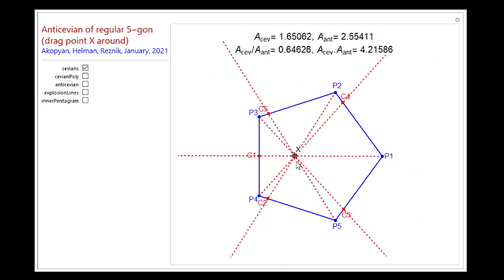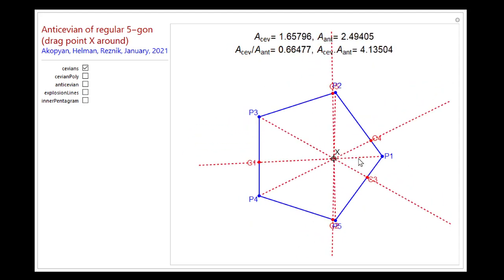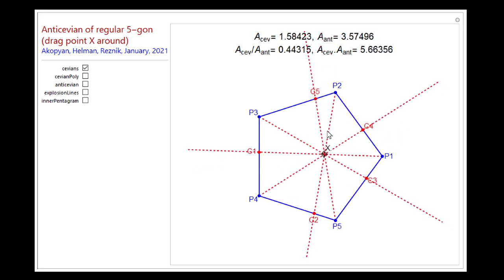In this case, I'm also going to track the intersections of each one of these Cevians with the corresponding opposite side. So the side opposite to P1 is P3, P4. That gives rise to a first intersection, C1. The side opposite to P2 is P4, P5. And that Cevian gives rise to a second intersection, C2, and so forth.